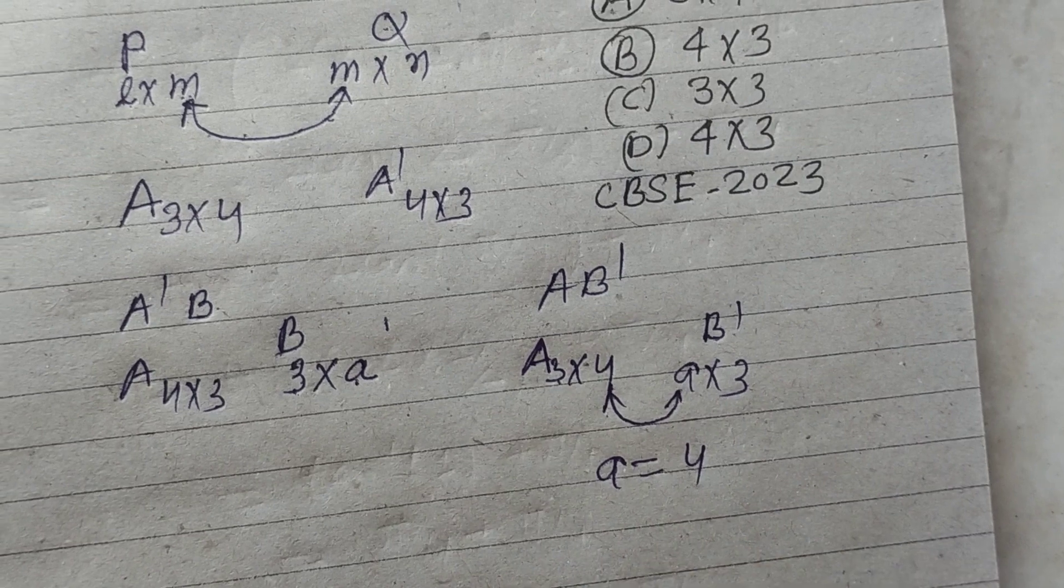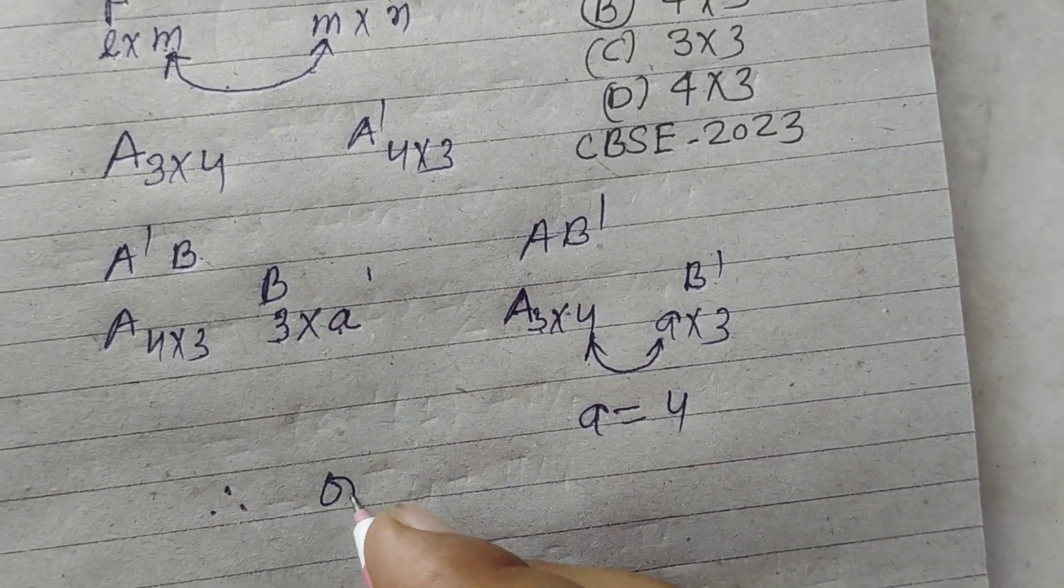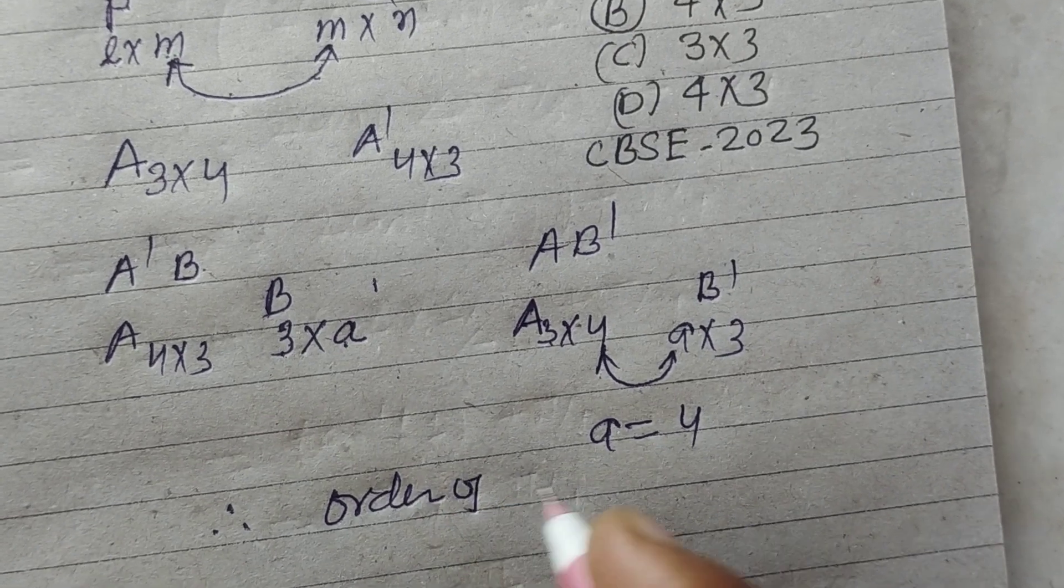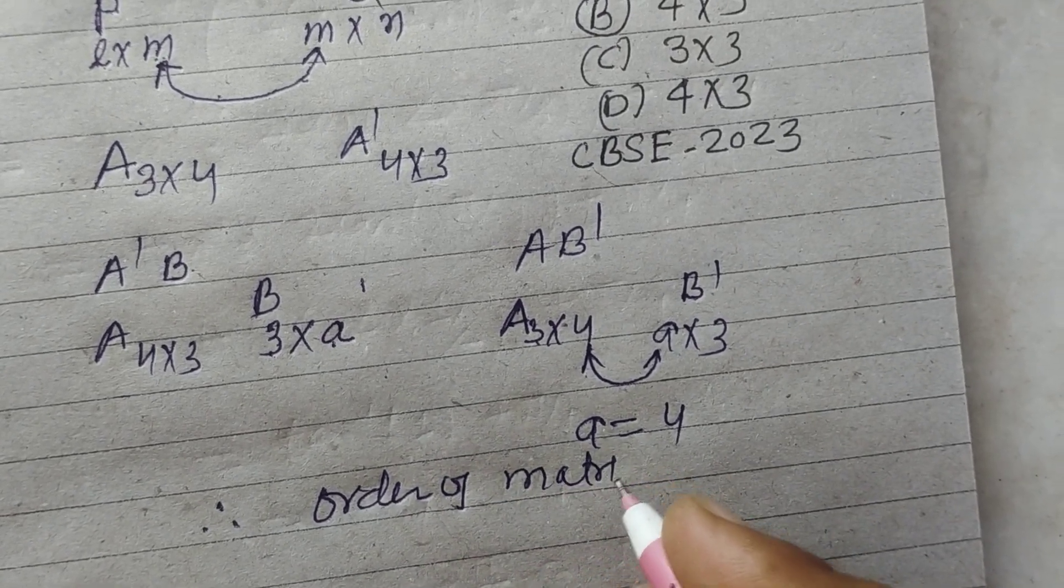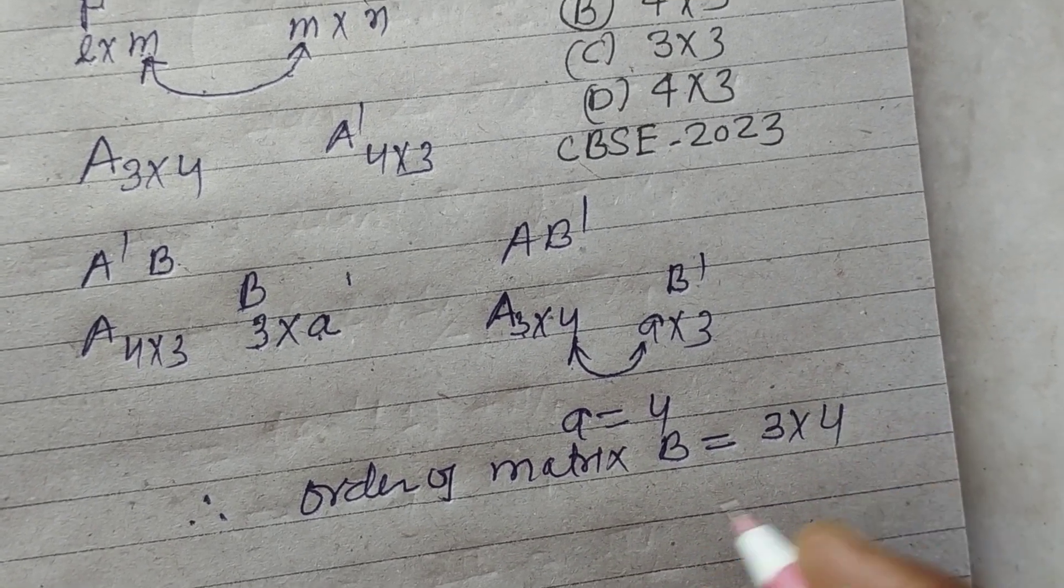Therefore alpha is equal to 4. Hence order of matrix B is 3 into 4.